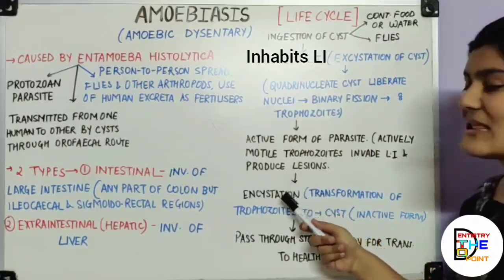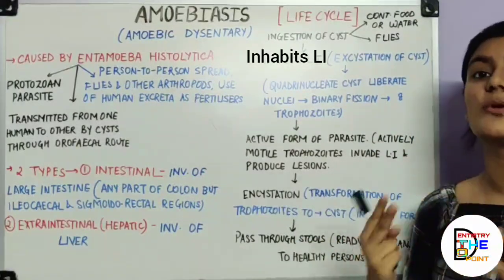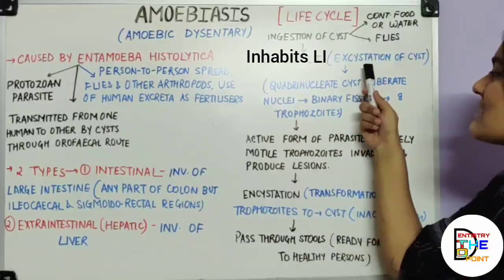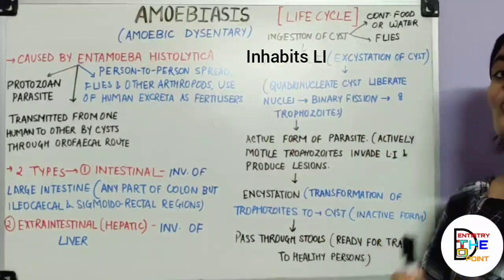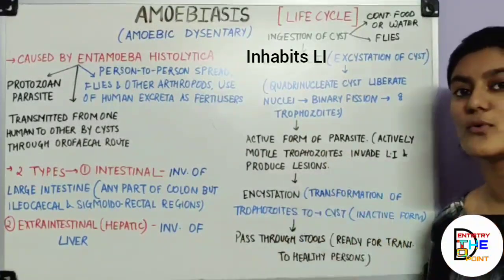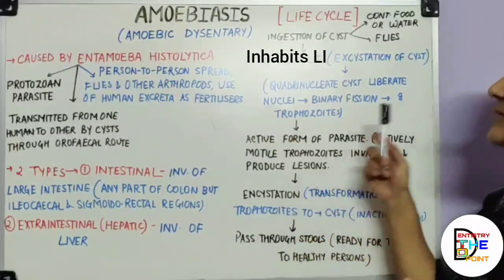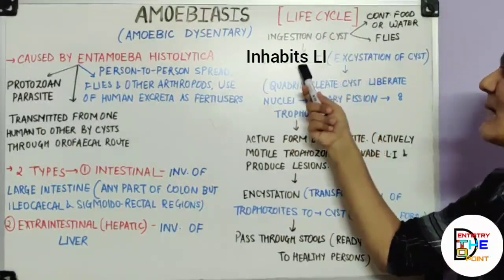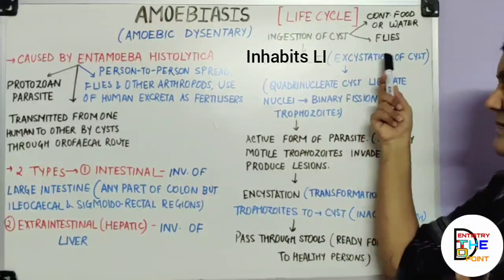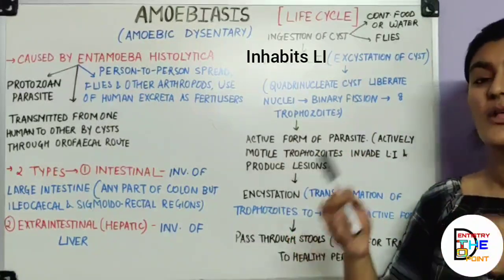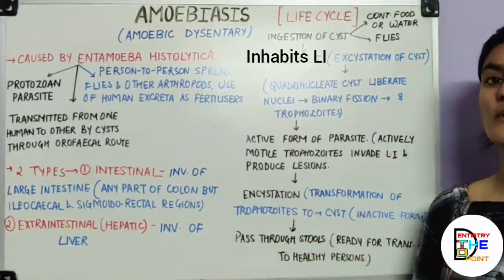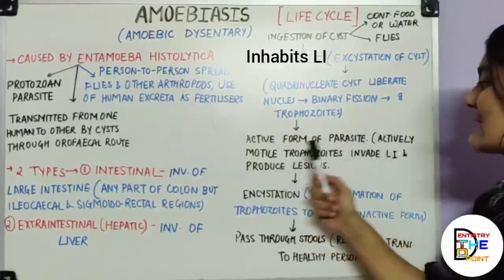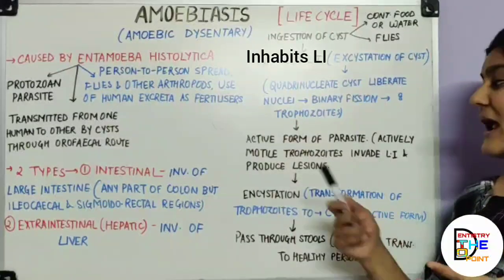Excystation is the conversion of cysts — the inactive form — to the active form, that is trophozoites. The quadrinucleate cyst liberates its nuclei, which undergo binary fission, resulting in the formation of eight trophozoites. These trophozoites form the active form of the parasite. The actively motile trophozoites then invade the mucosa of the large intestine and produce lesions.